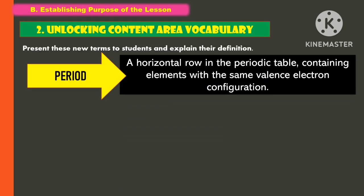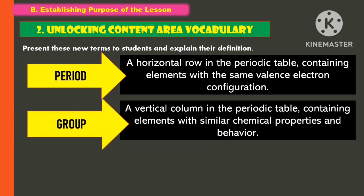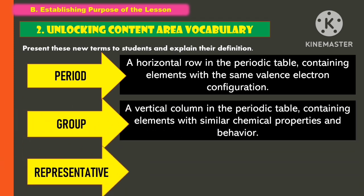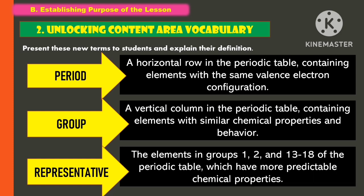In unlocking content area vocabulary, present these new terms to students and explain their definitions. The first word is period — it is a horizontal row of the periodic table containing elements with the same valence electron configuration. The second word is group — it is a vertical column in the periodic table containing elements with similar chemical properties and behavior.